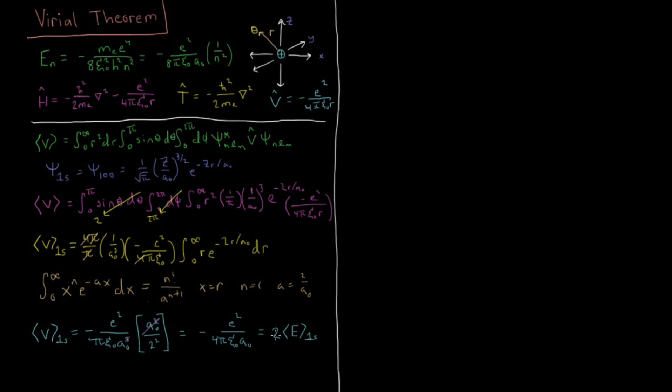So our potential energy is equal to 2 times the total energy. And what do we know beyond this? Well, we know that the expectation value of the kinetic energy plus the expectation value of the potential energy has to be equal to the total energy. There's only kinetic and potential energy. There's no other form of energy for us to hide, so these two have to add up to this total energy E. And whenever we have that the value of V is 2 times the total energy equals E1s, that means we know that our kinetic energy is equal to the negative of the expectation value for the energy. So we have our kinetic energy, we have our potential energy.